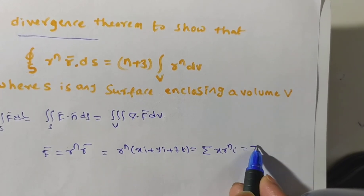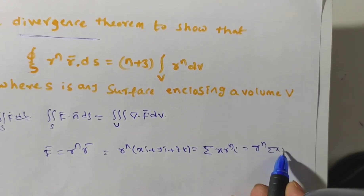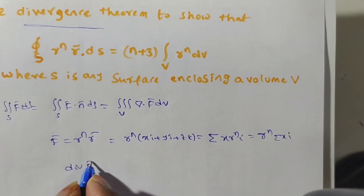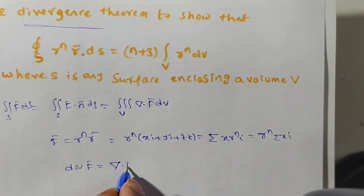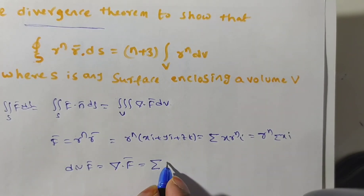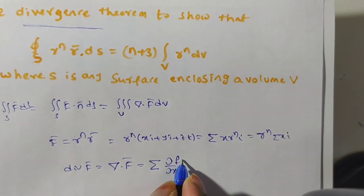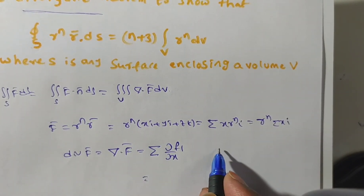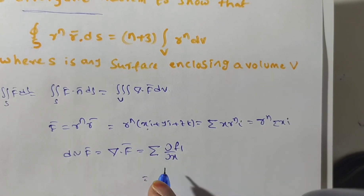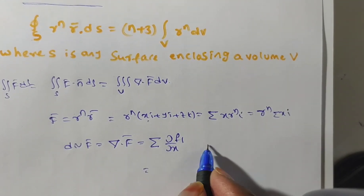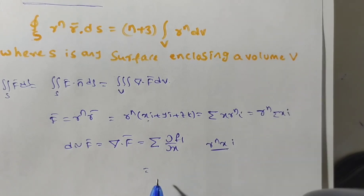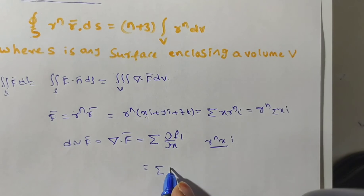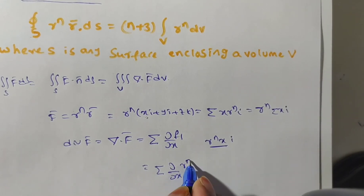We can write r^n outside the summation: r^n · summation(x·î). Now what we need to find is div(f̄), that is del · f̄. Symbolically, this is ∂f₁/∂x. From the expression, the i-th component is r^n · x. So we need summation of ∂/∂x of (r^n · x).